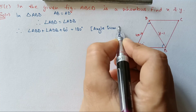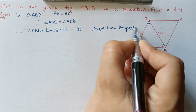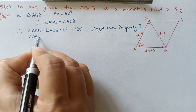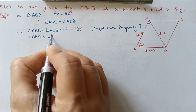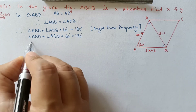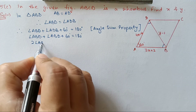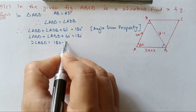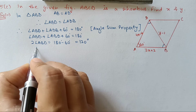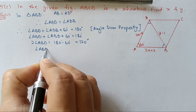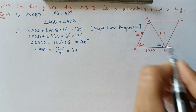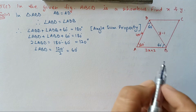By angle sum property, since the two base angles are equal, we write 2 times angle ABD equals 180 minus 60 equals 120 degrees. So angle ABD equals 60 degrees. All three angles are equal to 60 degrees, meaning triangle ABD is equilateral.